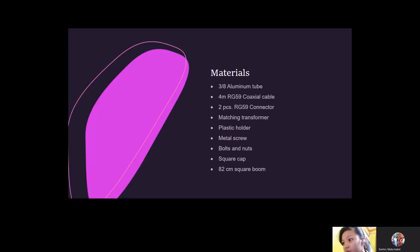and it is very commonly installed in older homes and commercial buildings. Third was 2 pieces of RG59 connection. It is the connector of our coaxial cable. Fourth was the matching transformer. A matching transformer is used to convert 300 ohms antenna output to 75 ohms, so that the low-loss coaxial cable can be used to transport the TV signal from the antenna to the TV set. Fifth was the plastic holder. Six was the metal screws. Seven was the bolts and nuts. Eight was the square cap. And lastly, our 82-centimeter square boom.